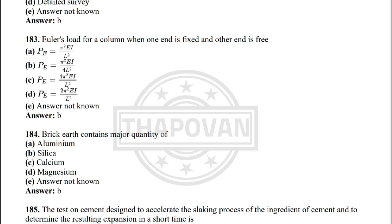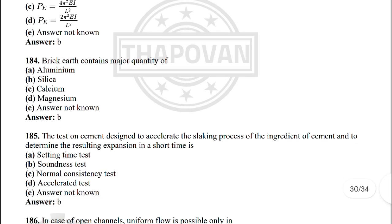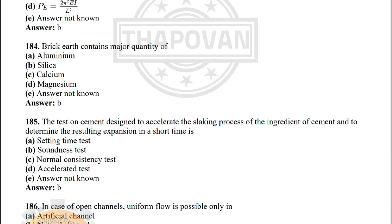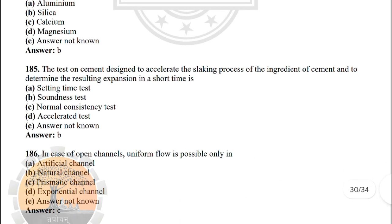Next: Euler's formula for a column when one end is fixed and the other end is free — the correct answer is option B: P = π²EA / (4L²). Next: brick earth contains major quantity of — option B: silica.